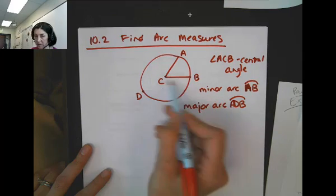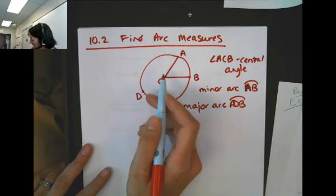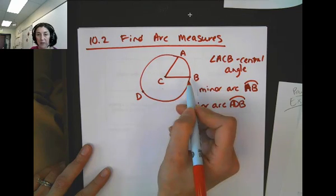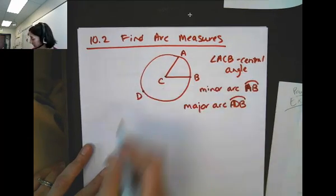Of course, the semicircle is exactly 180 degrees, and the endpoints of the arc are on the diameter.